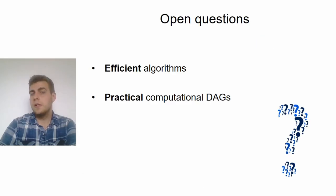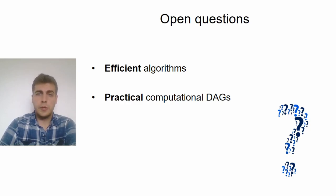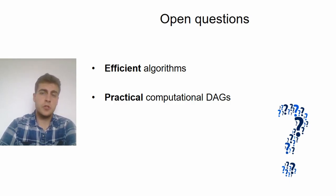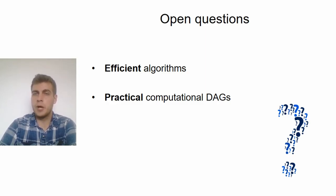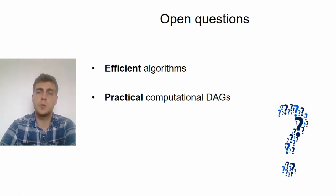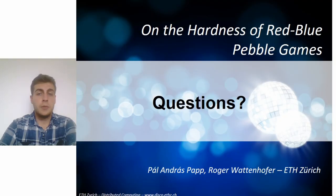So of course this still leaves many open questions in the area, with the most prominent one being whether we can solve these problems efficiently in practice, and this is still very well possible because practical computational DAGs might have some special structure or special property besides a small degree that might make the problem much easier in practice than in the general case. So this is certainly a promising direction for future work. And with that, I thank you for your attention and I'm happy to answer any questions in the Q&A session.